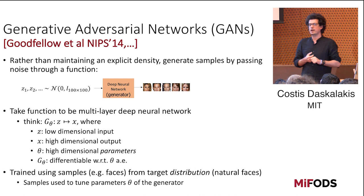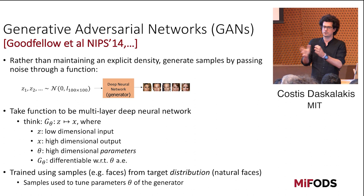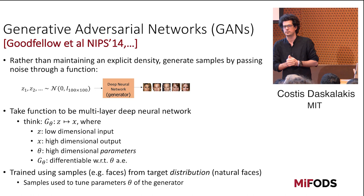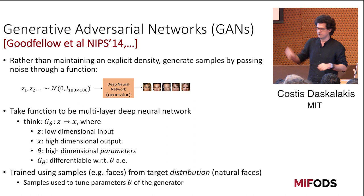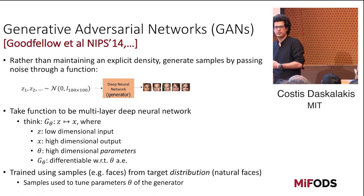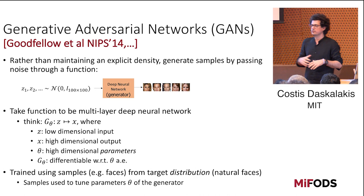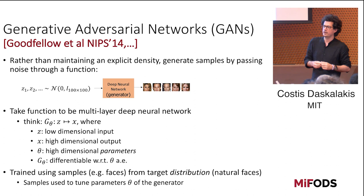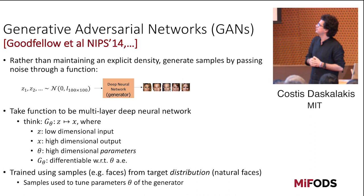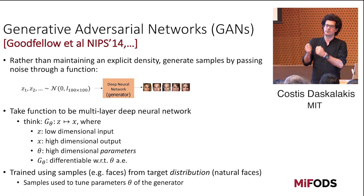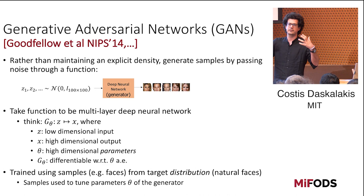Generative adversarial networks try to tackle that without actually keeping track of a density function. They do not want to explicitly parametrize the density function. Instead, they want to learn how to generate samples from that same distribution. In particular, they want to find a function f that will take boring Gaussian samples and spit out interesting samples from a real world distribution of interest. You pick from a family of rich enough functions, and the recent trend, starting from the work of Goodfellow a few years ago, is to use a deep neural network whose parameters are tuned so that this generation process does a good job.